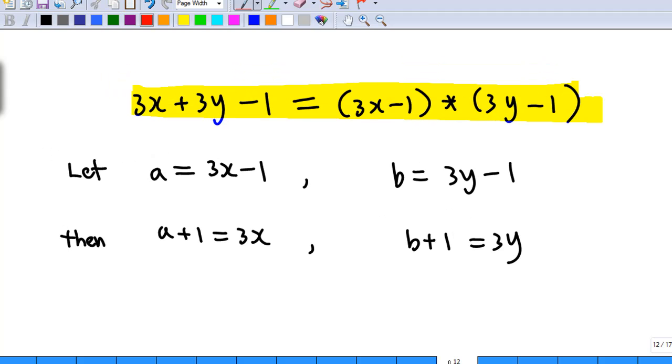That means a plus 1 must equal 3x and b plus 1 equals 3y. Now let's do the substitution. So I have, this is going to be my a here, 3x minus 1. And this is going to be my b here. And 3x is going to be a plus 1, and 3y is going to be b plus 1.